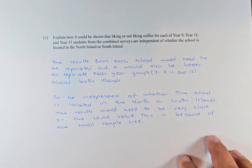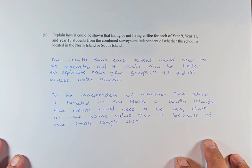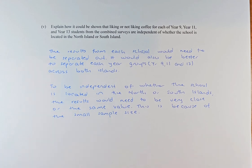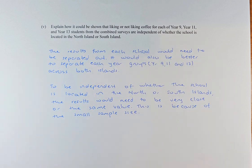I'm going to adjust the paper and the question is going to look like that. Explain how it could be shown that liking or not liking coffee for each of the year 9, year 11 and year 13 students from the combined surveys are independent on whether the school is located in the North or the South Island.